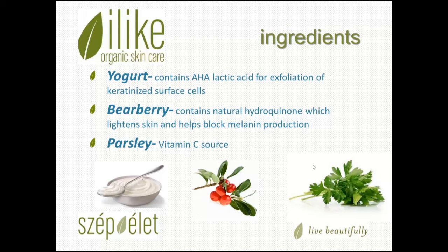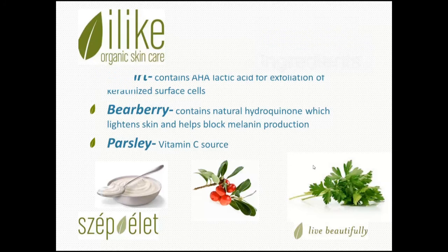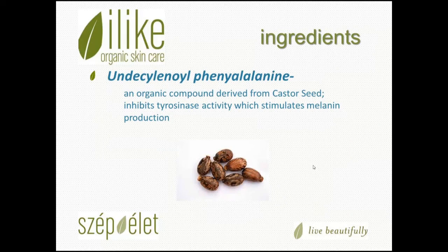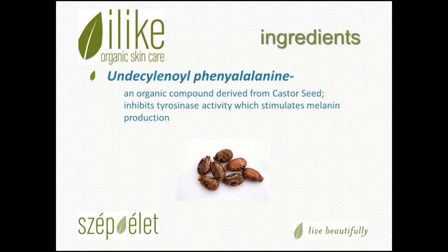Parsley is a vitamin C source. The best way to remember vitamin C is that it lightens, brightens, and tightens. Parsley helps to moisturize our skin, stimulates circulation for better absorption, and also soothes redness. The vitamin C in the parsley is the ingredient that will lighten and brighten the skin. Undecacetyleneoyl phenylalanine is derived from castor seed. This is an organic compound that inhibits tyrosinase activity, which stimulates melanin production, so we're inhibiting that activity to decrease melanin production.